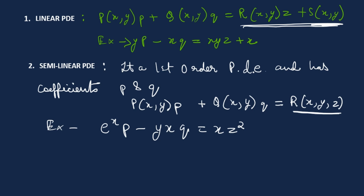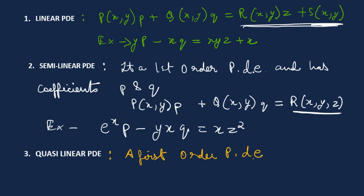Now we move on to the next one: the quasi-linear partial differential equation. In the quasi-linear PDE, we again have a first-order PDE, and P and Q are its coefficients.